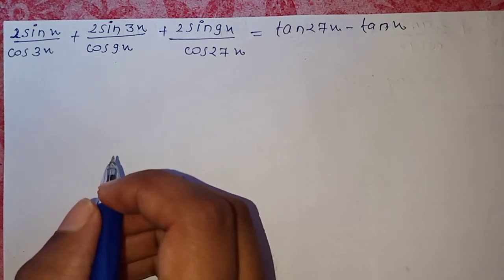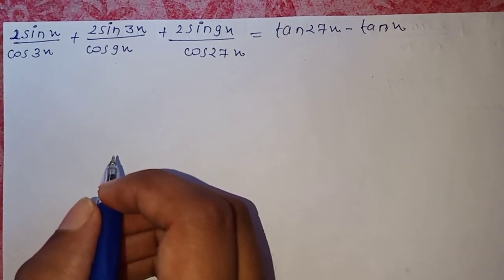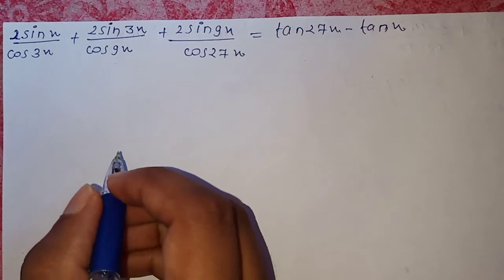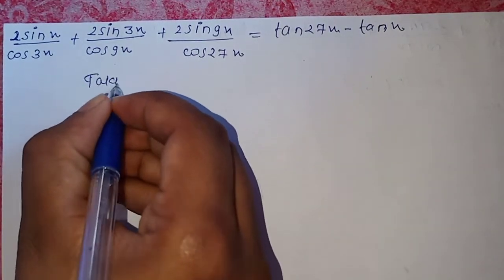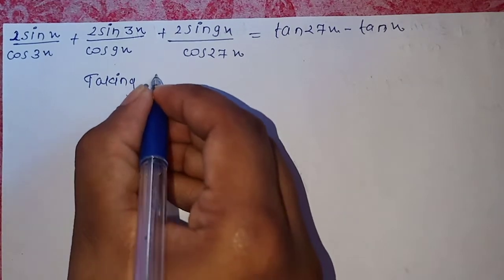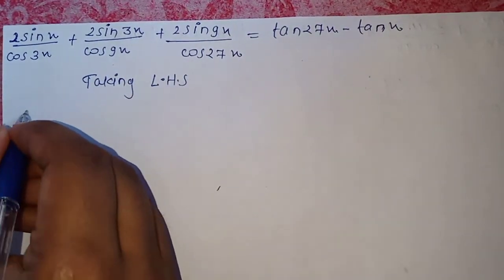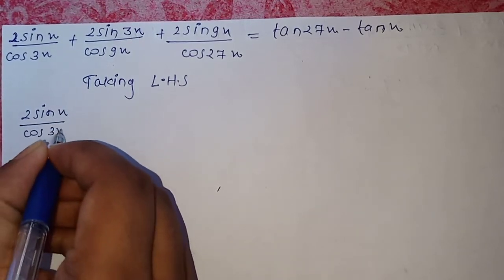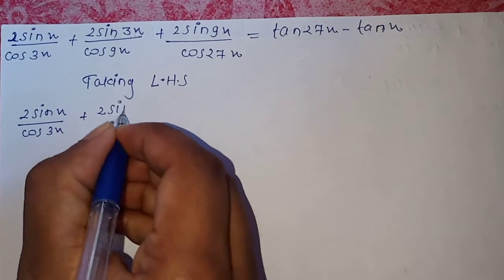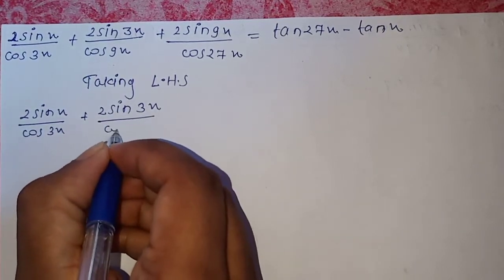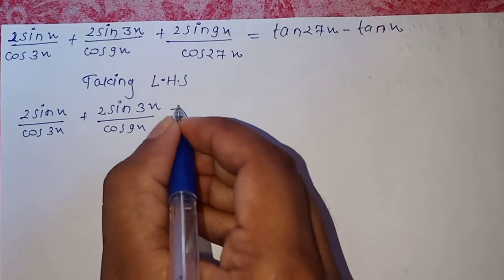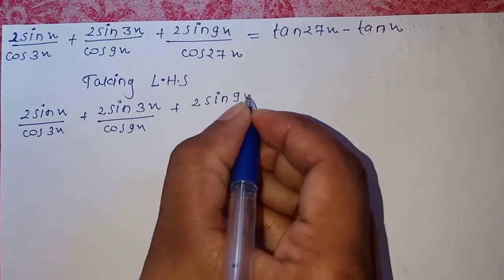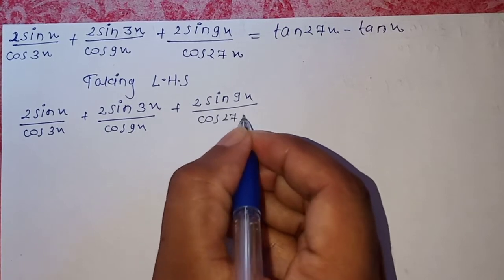We need to prove: 2sin(x)/cos(3x) + 2sin(3x)/cos(9x) + 2sin(9x)/cos(27x). Taking LHS: 2sin(x)/cos(3x) + 2sin(3x)/cos(9x) + 2sin(9x)/cos(27x).